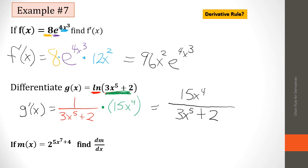The third problem: the derivative of 2^(5x⁷ + 4). We have two different functions — the base 2 and the exponent 5x⁷ + 4. The derivative of 2^x is 2^x times the natural log of the base. So the derivative of 2^(5x⁷+4) is 2^(5x⁷+4) times ln(2), then multiplied by the derivative of the exponent, which is 35x⁶. That gives the final answer.